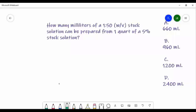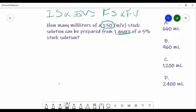This one is a little different. This one is initial strength times initial volume equals final strength times final volume. This is the formula we're going to use. The question says, how many milliliters of a 1 to 50 weight over volume stock solution can be prepared from 1 quart of a 5% stock solution? Okay, and so with that being said, you automatically know that we are going to use the 1 to 50, the 1 quart, and the 5%. Okay, so this is a problem that we're going to have to do some converting here.